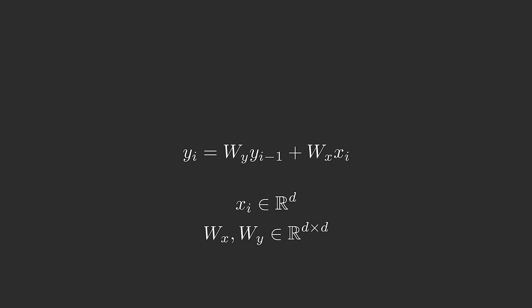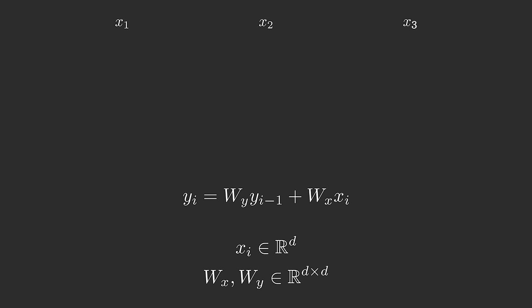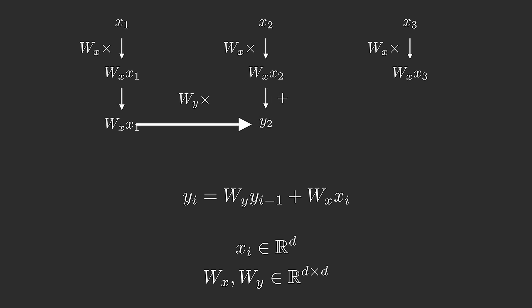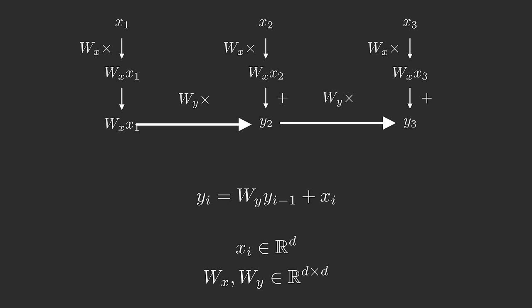The linear recurrence operator is given by this formula. To get the i-th output vector, you multiply the previous (i-1)-th output vector with a matrix W_y, and add the i-th input vector multiplied by a different matrix W_x. The entries in the W matrices are the parameters learned by the model. Since the W_x matrix is just applied to each input independently, we can think of it as part of the previous layer, simplifying our recurrence operator. A linear recurrence is actually a special case of a more general operation called a scan — let's start with the simplest example: a cumulative sum.